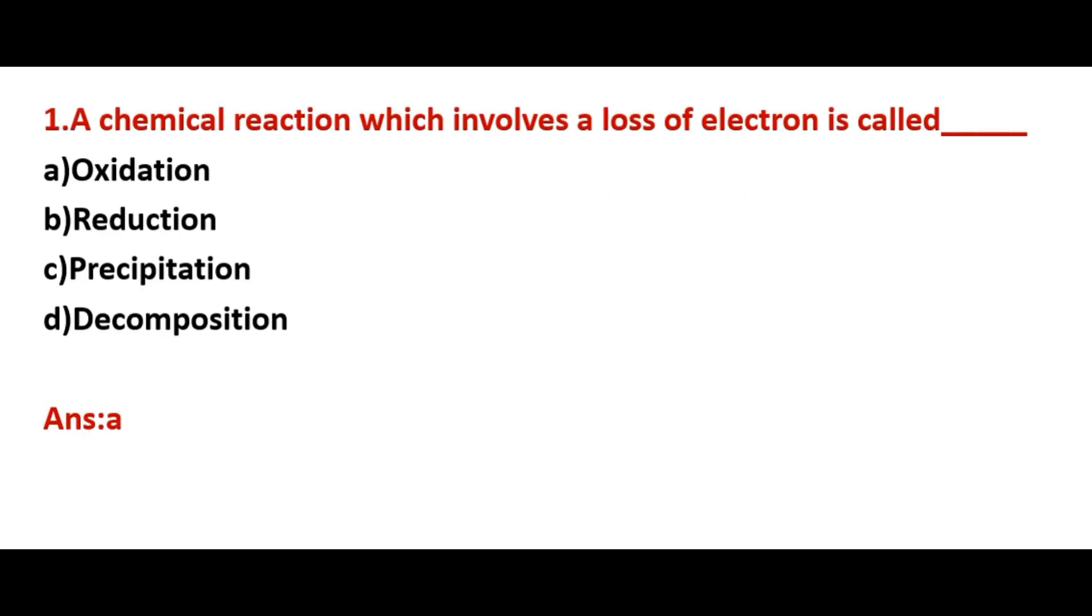First one: A chemical reaction which involves a loss of electron is called? Answer is A, oxidation. Oxidation means loss of electron or hydrogen atom, or we can say gain of oxygen atom.